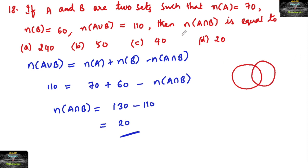First, N(A∪B) is given as 110. Let N(A∩B) be X.